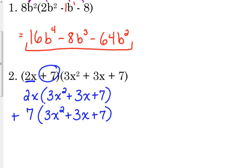Okay? So we're going to distribute the 2x to the parentheses. So that gives us 2 times 3 is 6, x times x squared is x cubed. 2 times 3 is 6, x times x is x squared. Let's see here. 2 times 7 is 14, and it was 2x, so that gives us 14x.